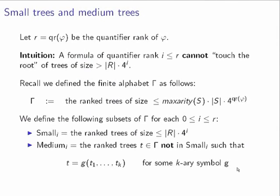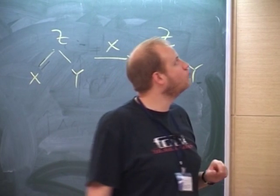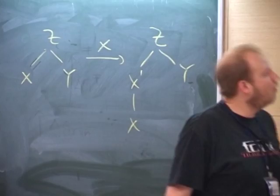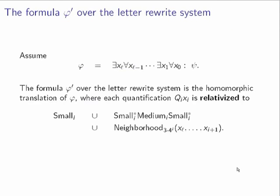So we have the exponential trees and two subsets: small trees and medium trees. Assume our given formula phi is in prenex normal form. We're going to construct a new formula phi'. The question is how does phi' look.